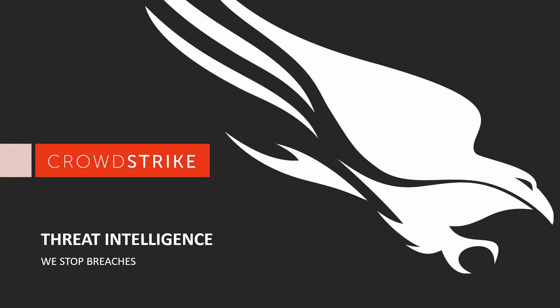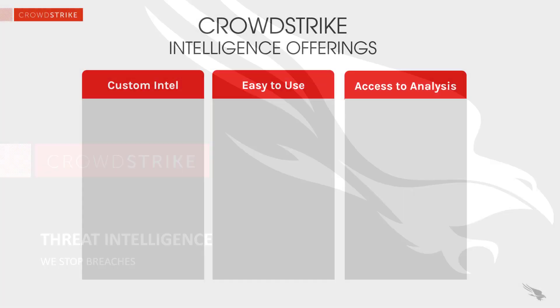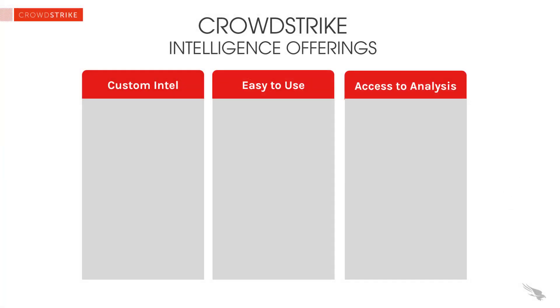CrowdStrike was founded with the sole objective to stop breaches. From the beginning, threat intelligence has been a key component of our effective approach. It is critical that organizations have consumable intelligence so that they can understand the adversary, learn from attacks, and take action on indicators to improve their overall defenses. With that, today's demonstration is going to focus on the intelligence offerings available from CrowdStrike.